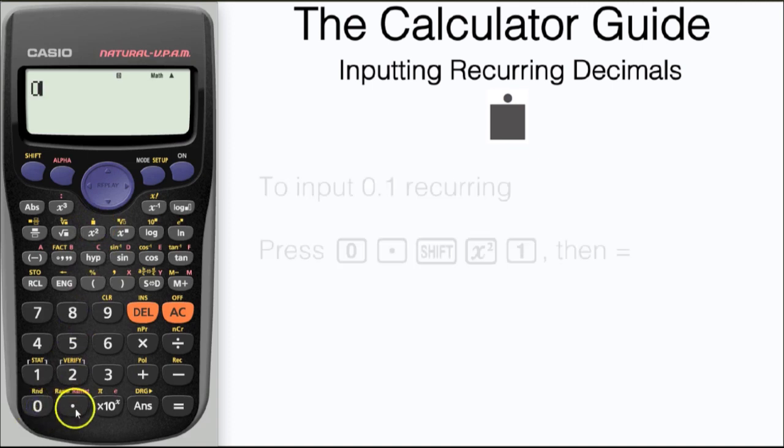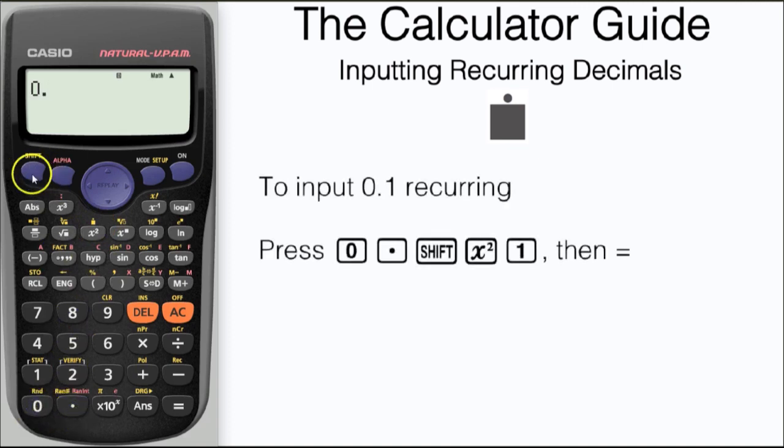Input 0 and then the point. Now we need to access the recurring decimal feature, which is shift and x squared. We can see that displayed here with a box with a dot above it. Input 1 and then press equals.